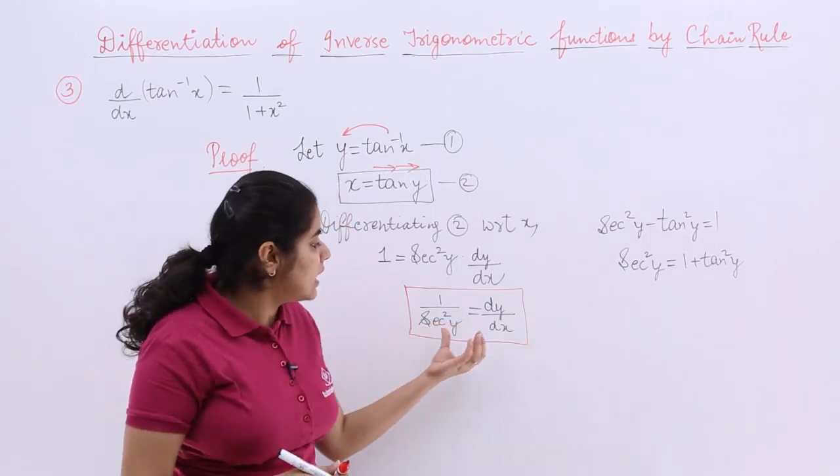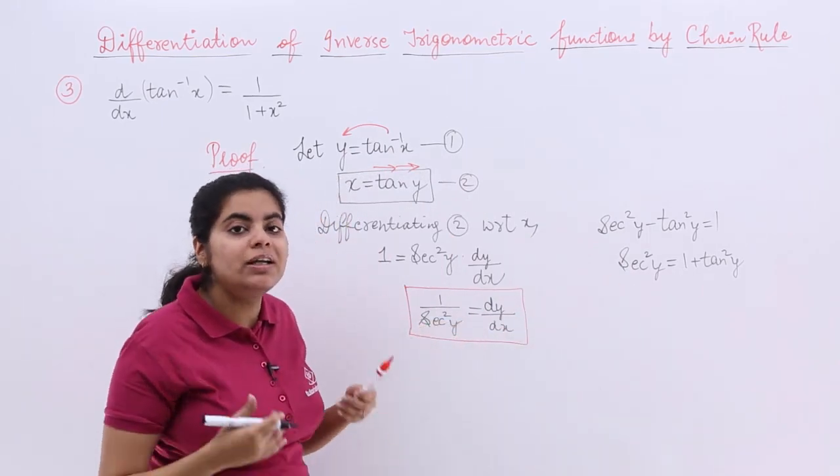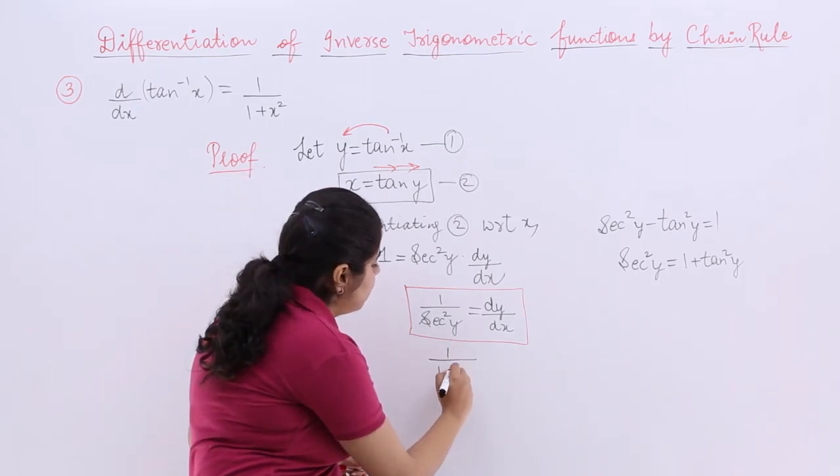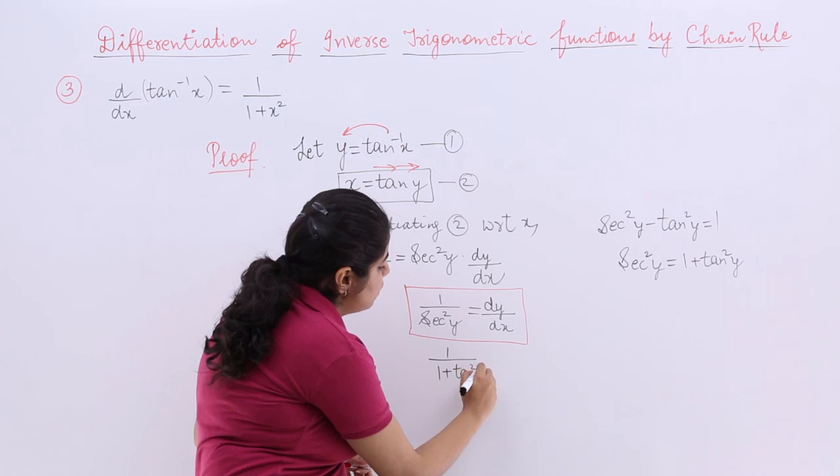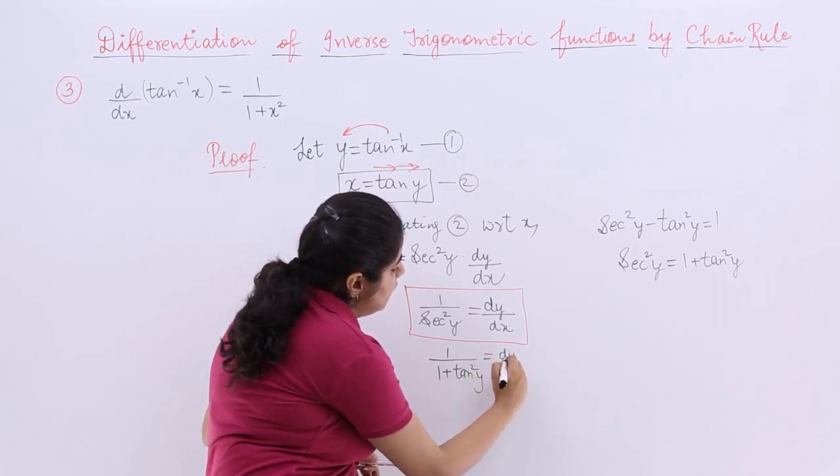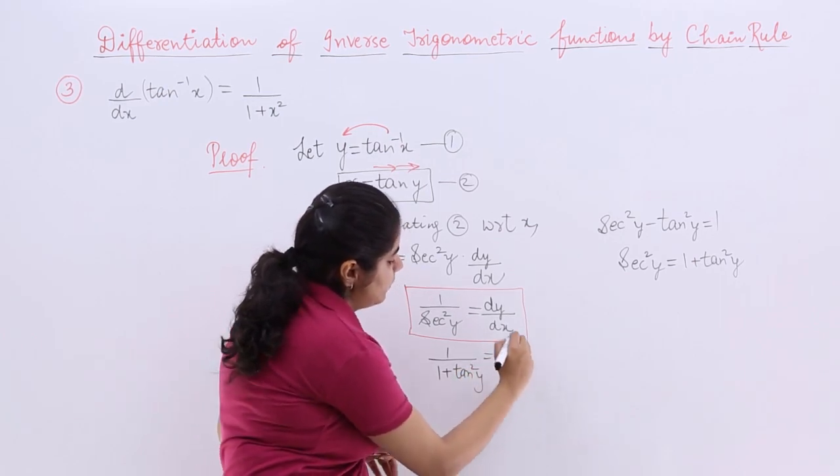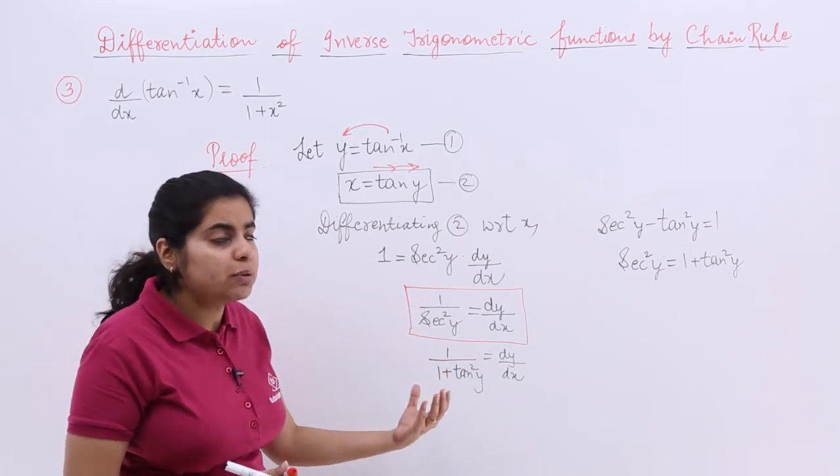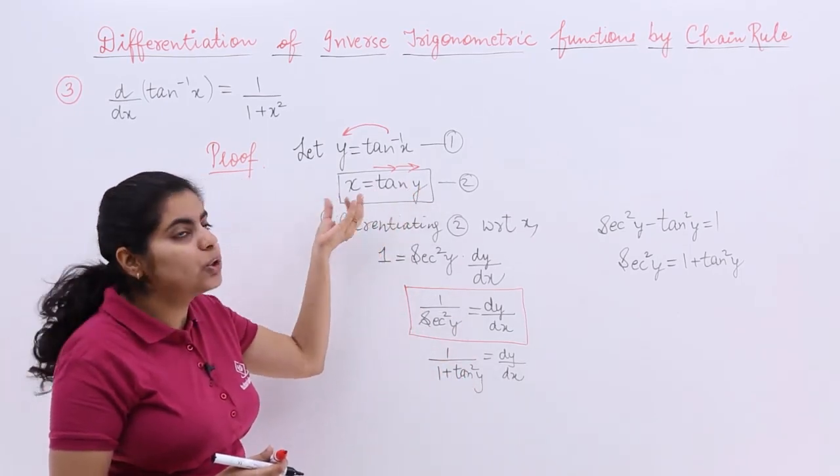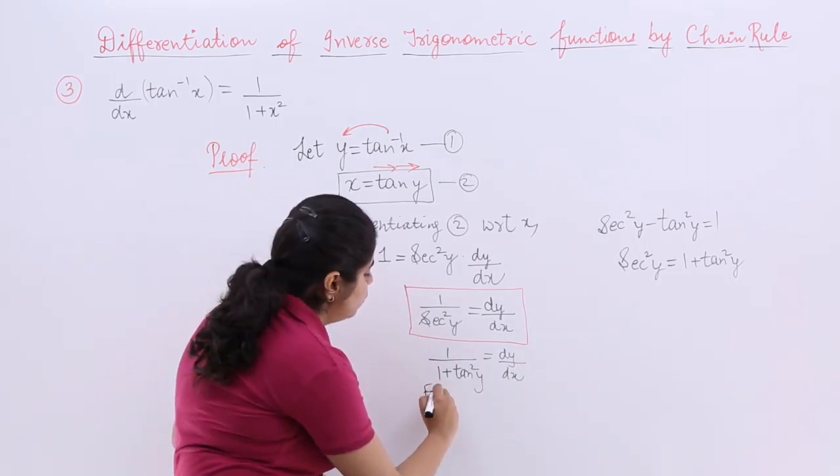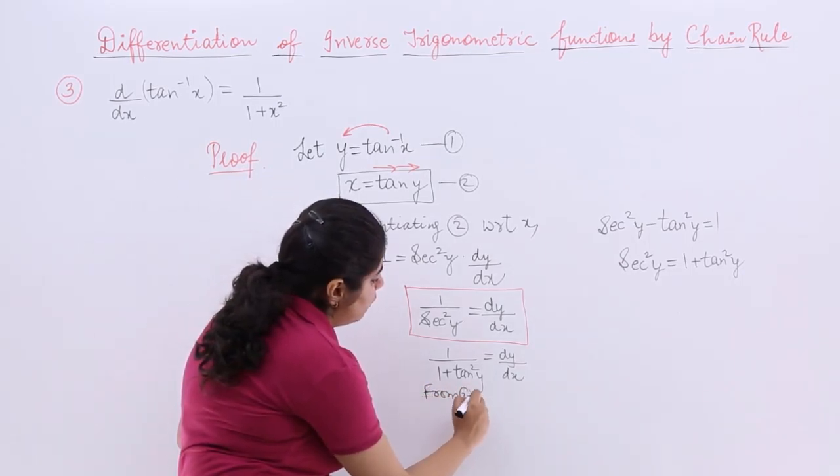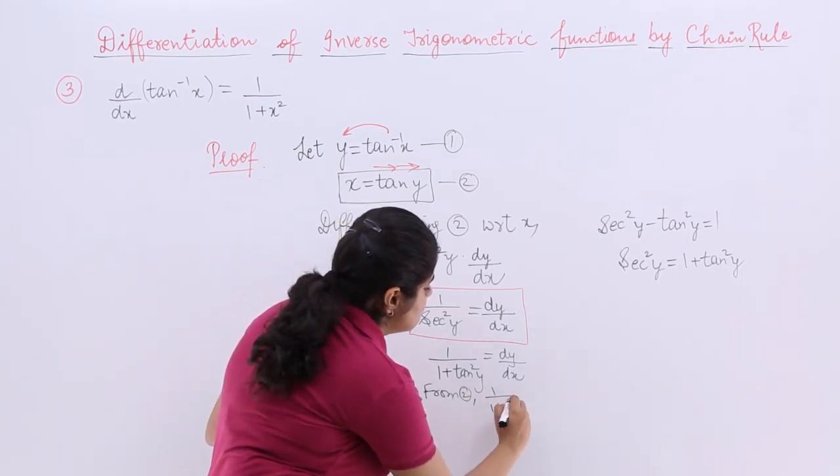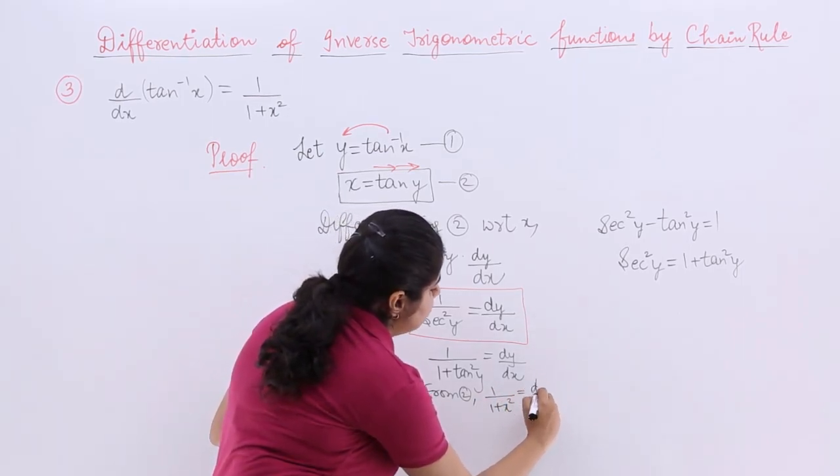And 1 plus tan square y when put here, it becomes 1 upon 1 plus tan square y equals dy by dx. Now tan y from equation 2 was x. So from 2, I have 1 upon 1 plus x square equals dy by dx.